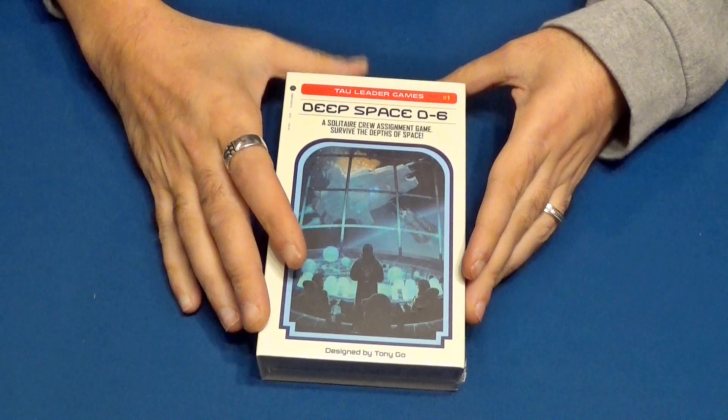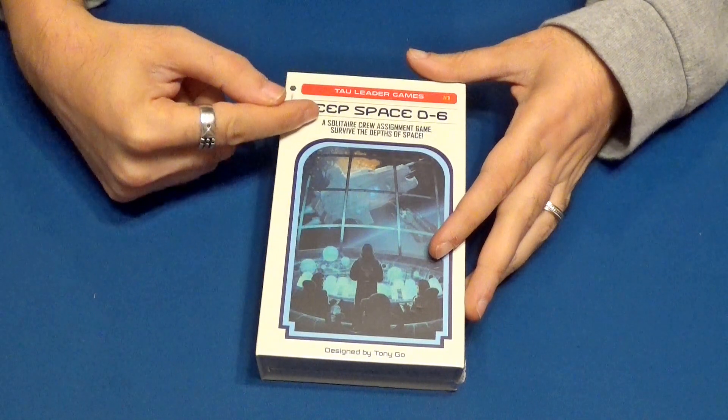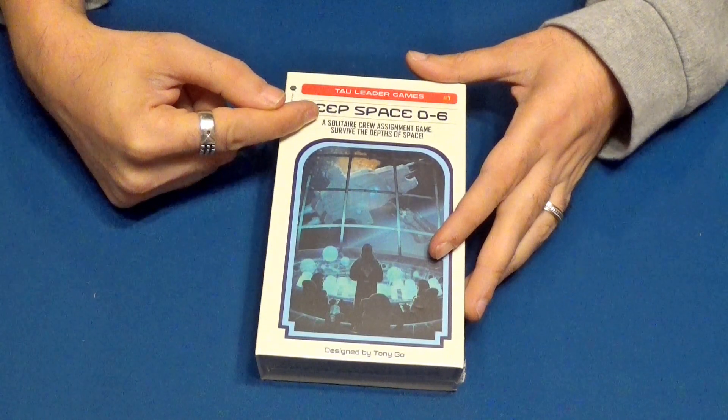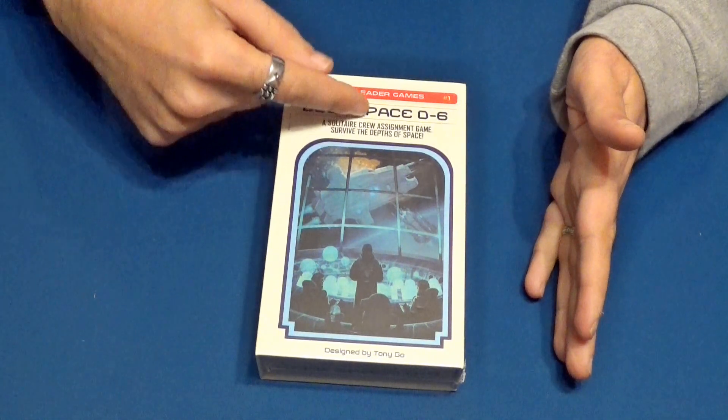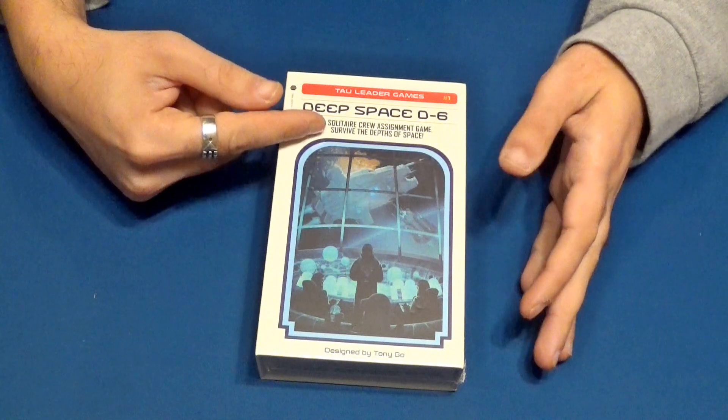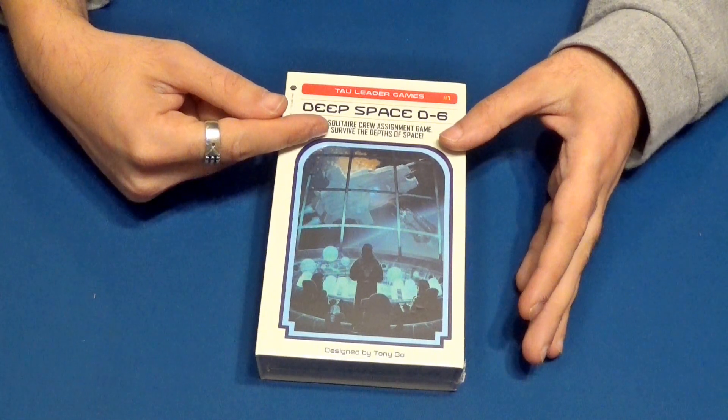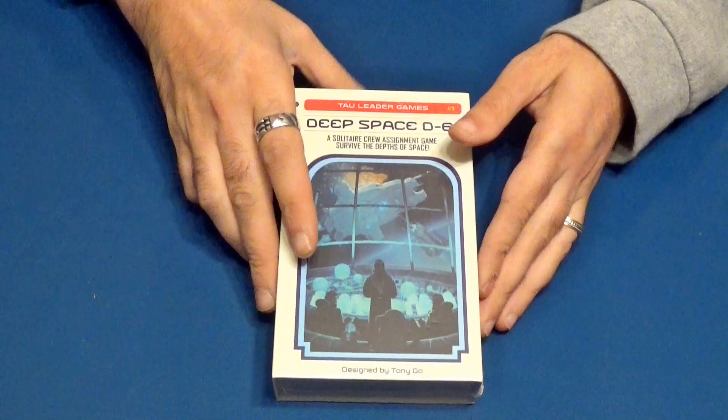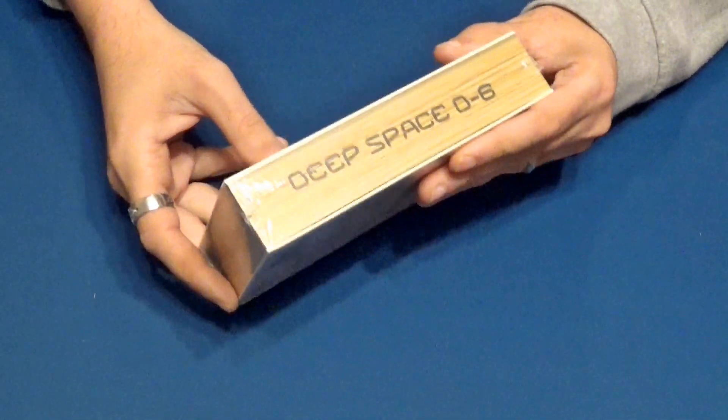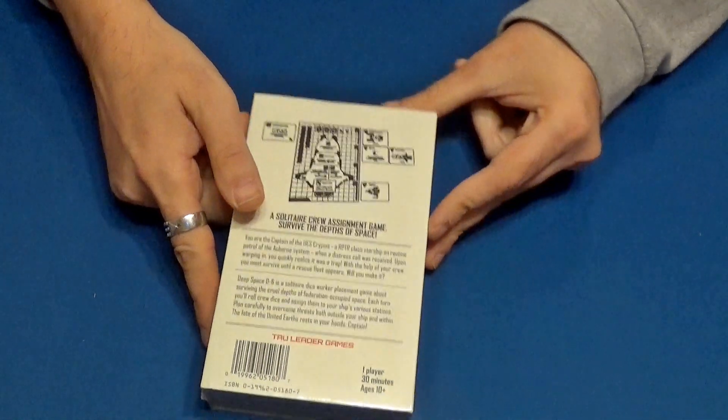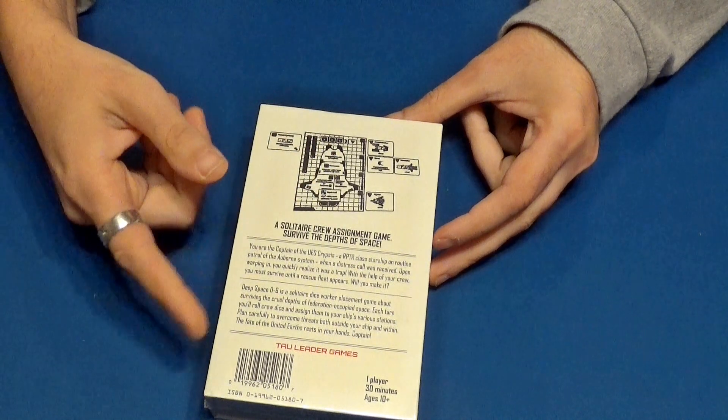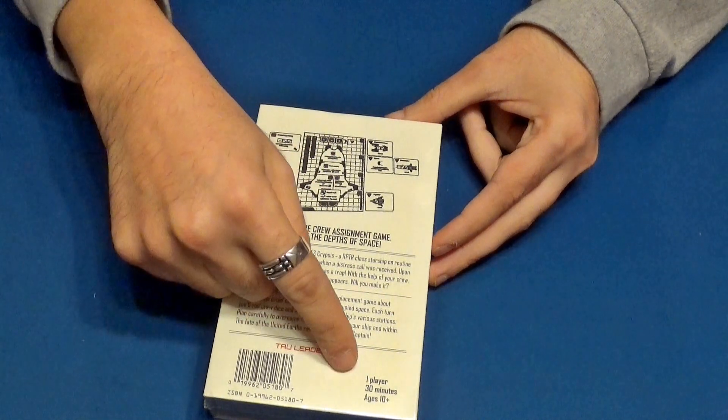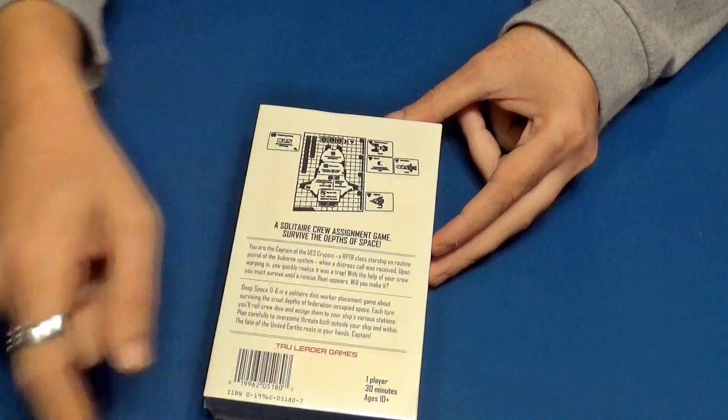Vamos a ver qué contiene la caja. Tenemos la caja del Deep Space D6, que nos pone aquí que es un juego de una sensación de tripulación en solitario, sobrevive las profundidades del espacio. Vemos un poco de lo que se está resumiendo el juego, con la ilustración. Así tiene un jugador, unos 30 minutos a partir de 10 años.